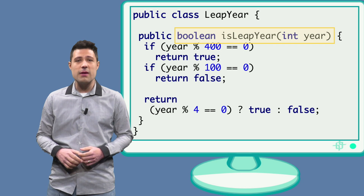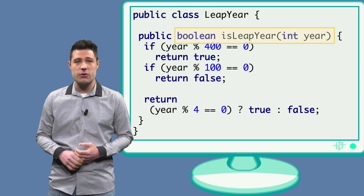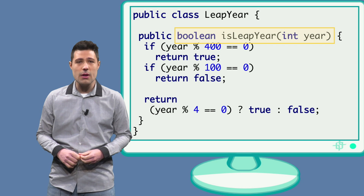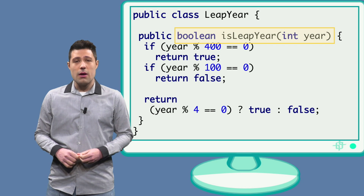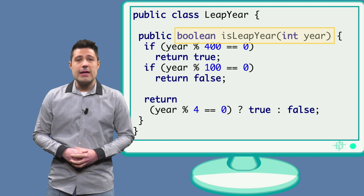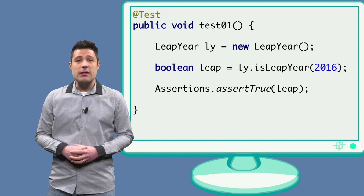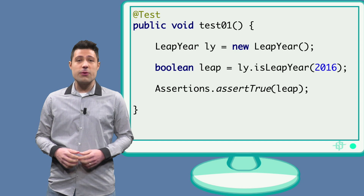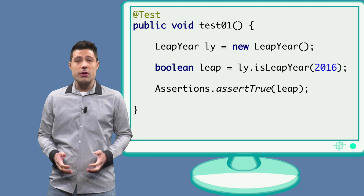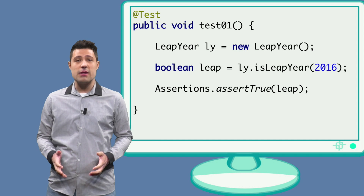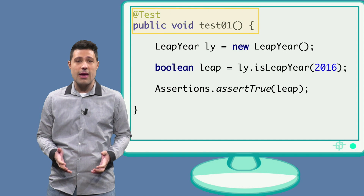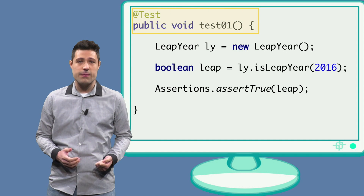Pause the video and take a moment to read the source code. Now let's write an automated test for the first partition. For this to be a JUnit test, it should start with @Test.